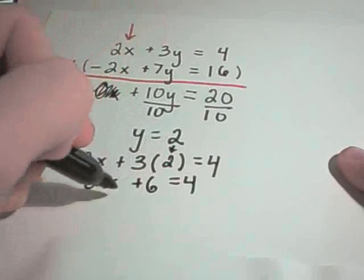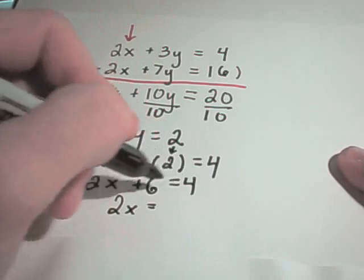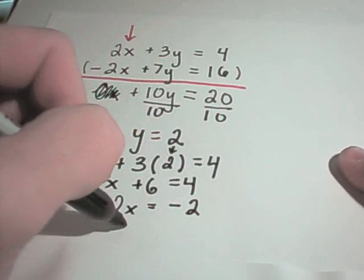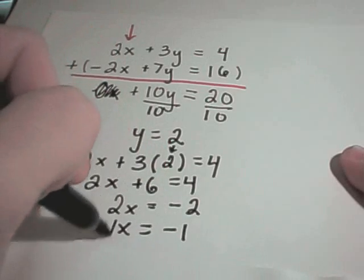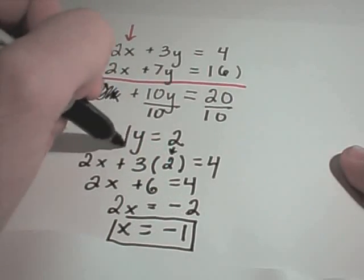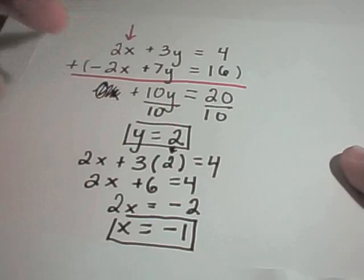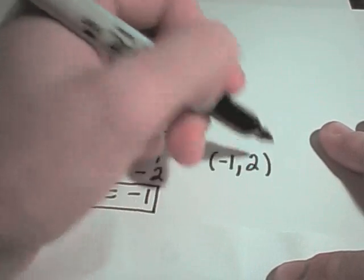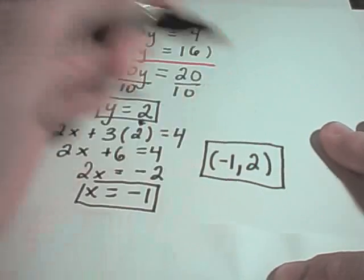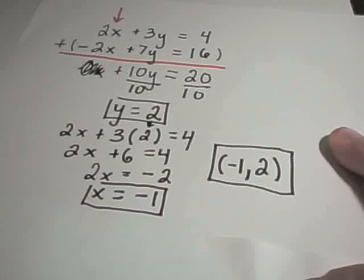I can subtract 6 from both sides. 4 minus 6 is negative 2. If I divide both sides by 2, I'll get that x equals negative 1. And these are my solutions. This is my solution to this system of equations. It says you're going to have a solution of negative 1 comma 2. Negative 1 for x, 2 for y.